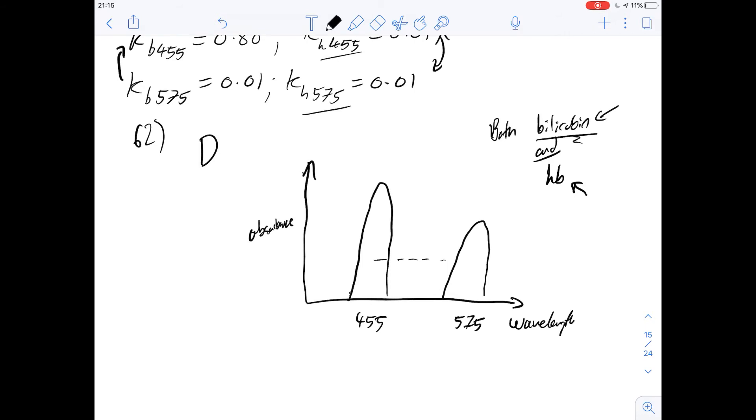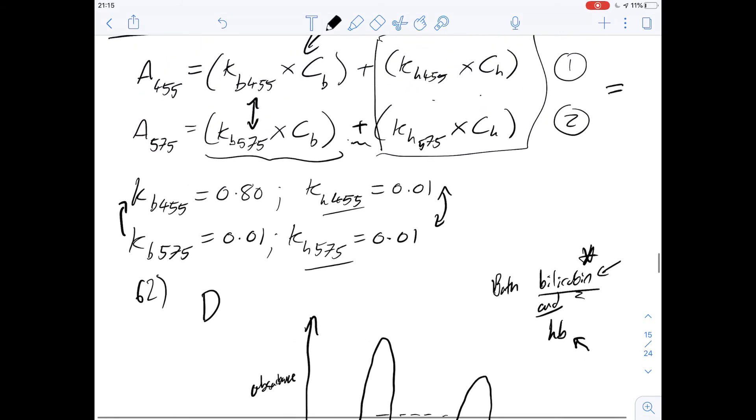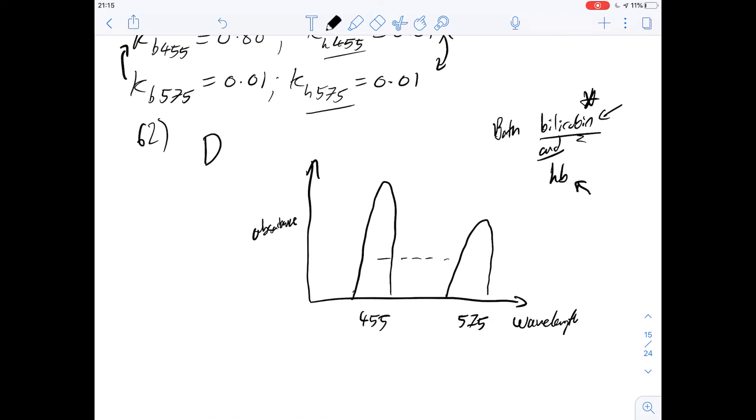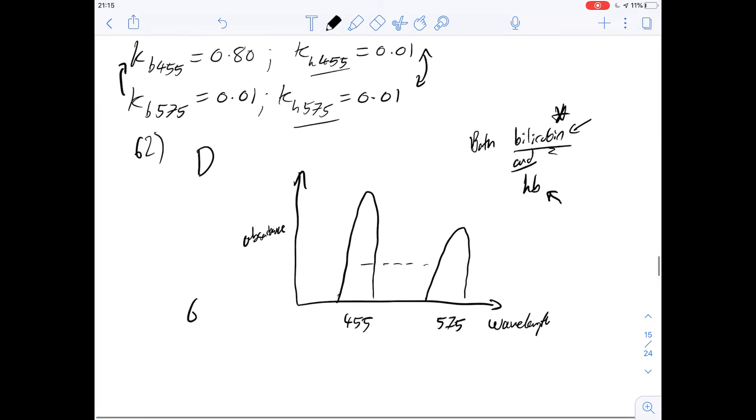So if hemoglobin absorbs equally at both wavelengths, it means that we're keeping this variable constant. And so we're only measuring the change in the absorbance due to bilirubin at these different wavelengths. And then we can obviously work out how much the concentration would be from the equations we've been given above. So because we're measuring these two different variables, we want to keep one the same. So the important thing here is that hemoglobin absorbs equally at this wavelength and at 455 nanometers. So that's why the answer for number 63 is going to be D.